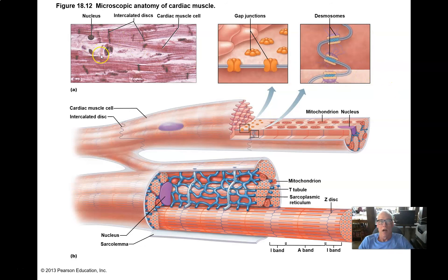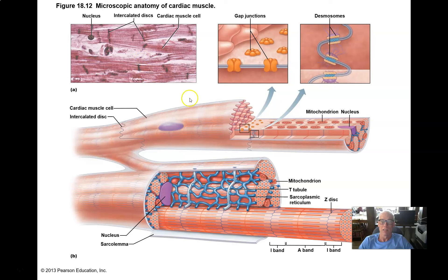Here we see cardiomyocytes in this micrograph. You can see the striations of their sarcomeres — their actin-myosin filaments overlap in such an orderly way. The dark smudges are the junctions where the cells are stitched end-to-end. They're short branched cells stitched together end-to-end, and in those intercalated disks are lots and lots of desmosomes that anchor the cytoskeleton of one cell to the cytoskeleton of its neighbor. They're very tough connections.